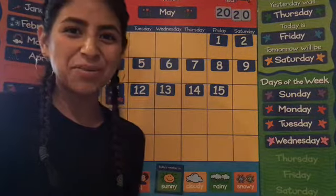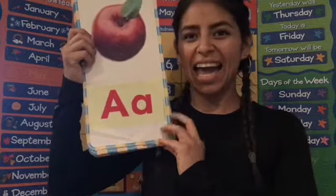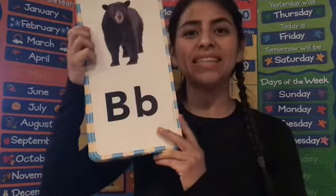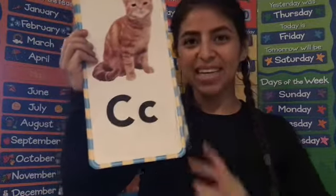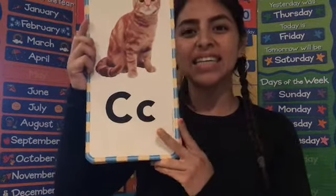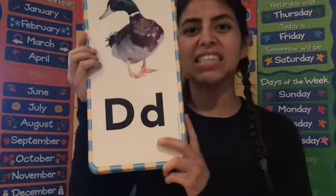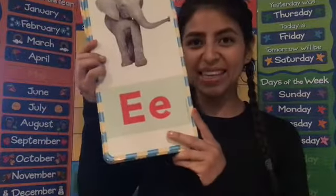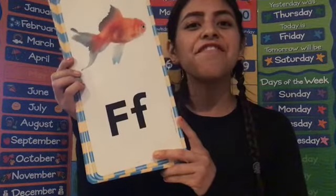Great work. Now we can move on to review. A says, ah. B says, b, b. C says, c, c. D says, duh. E says, eh, eh. F says, f, f, f.